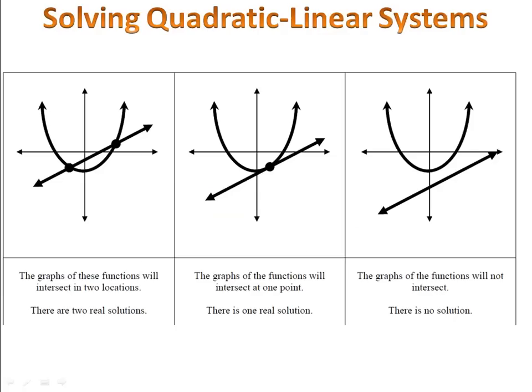When we have a quadratic linear system, we have both a line and a parabola. We can solve quadratic linear systems graphically by graphing the parabola, graphing the line, and looking for the intersection.